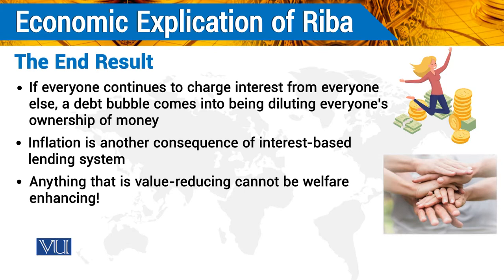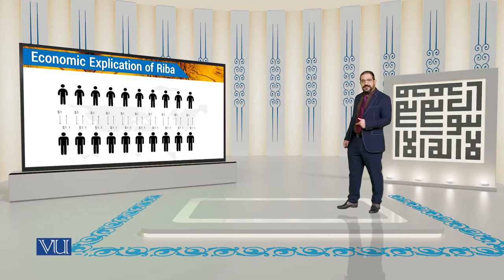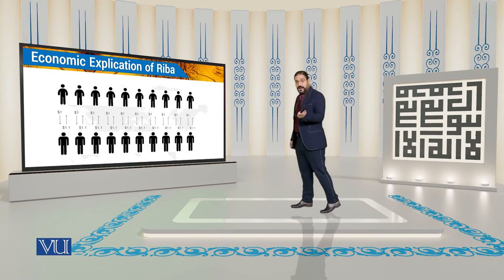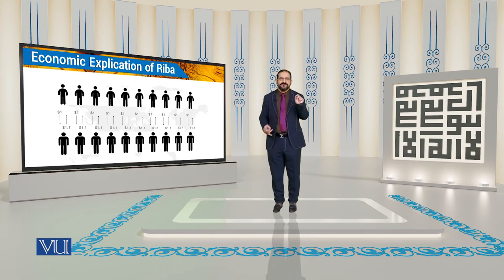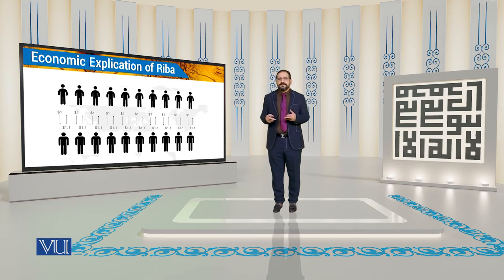The question arises: where would that additional one dollar come from? Generally, in societies, the central bank would actually be printing more money to ensure that entitlements on money are commensurate with supply. When more money is printed, as everyone knows, its effect is felt as inflation. So a natural outcome of dealing in interest is inflation.